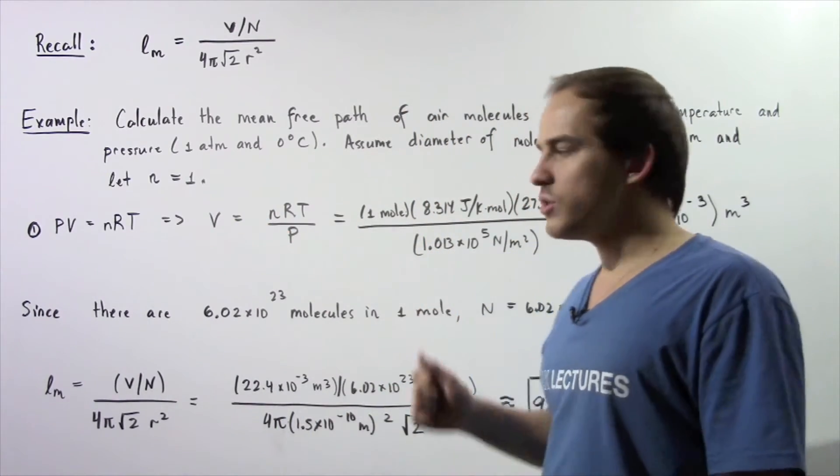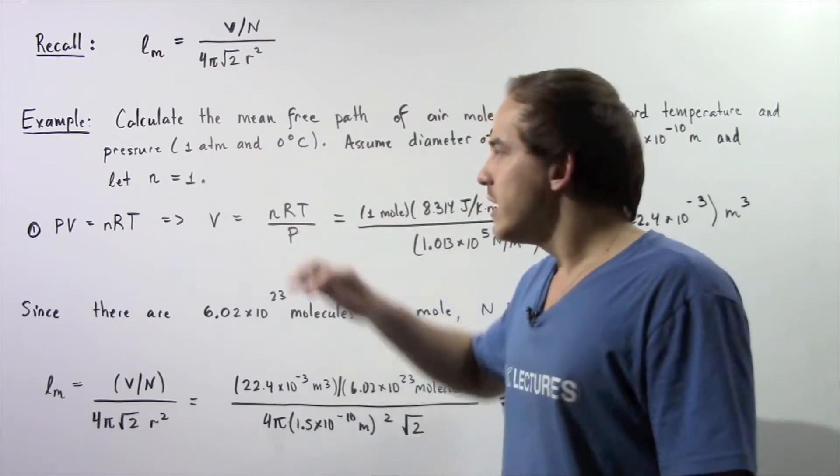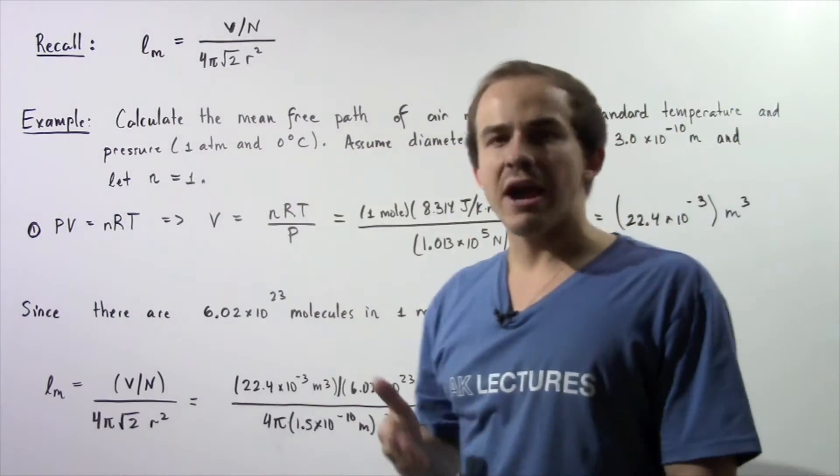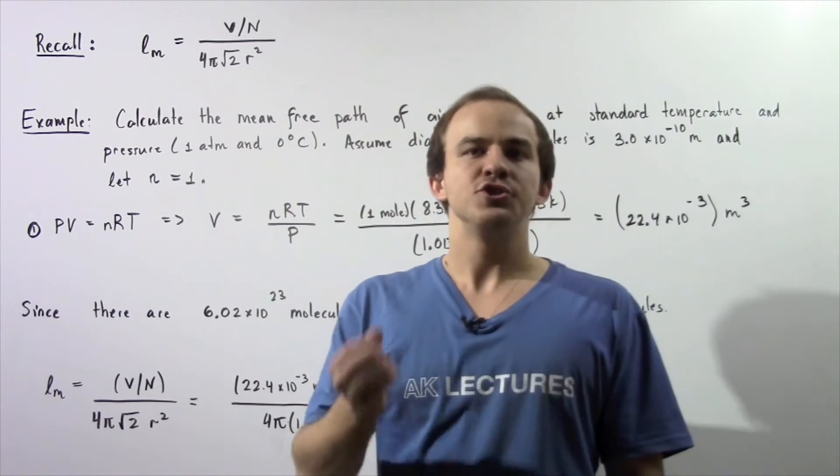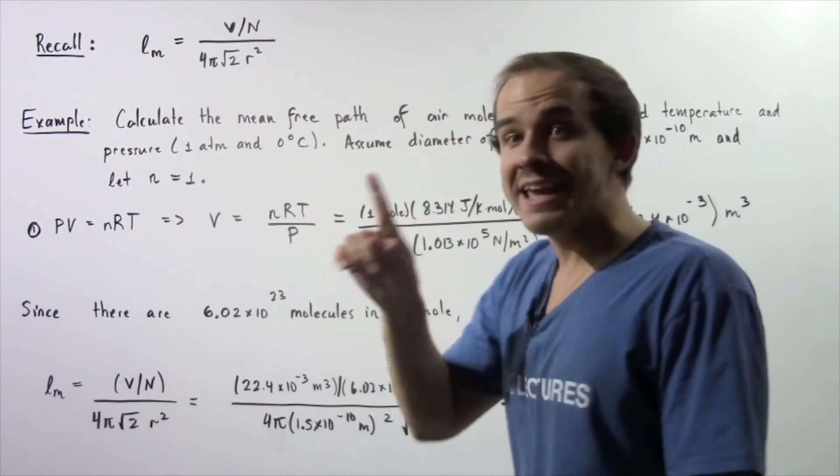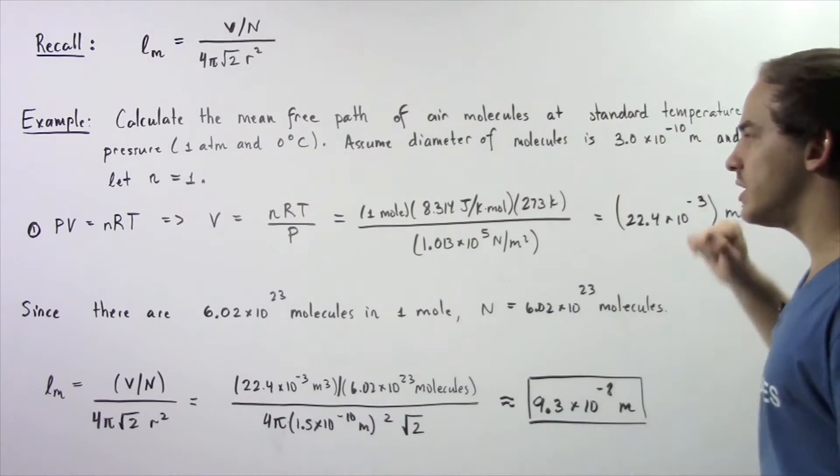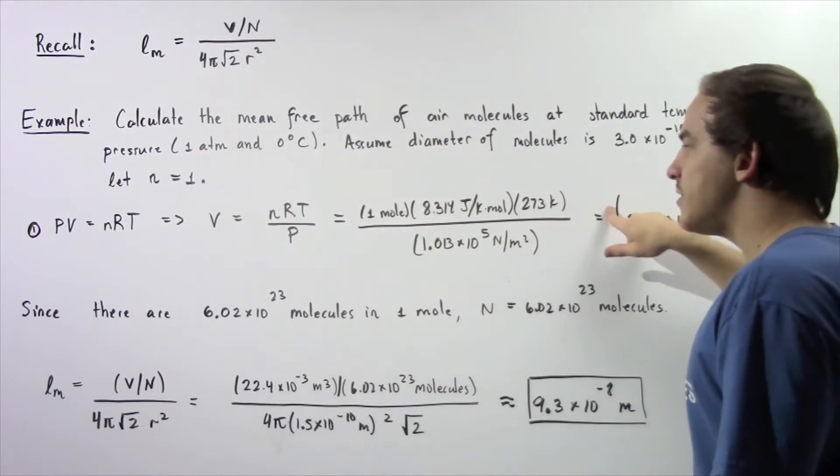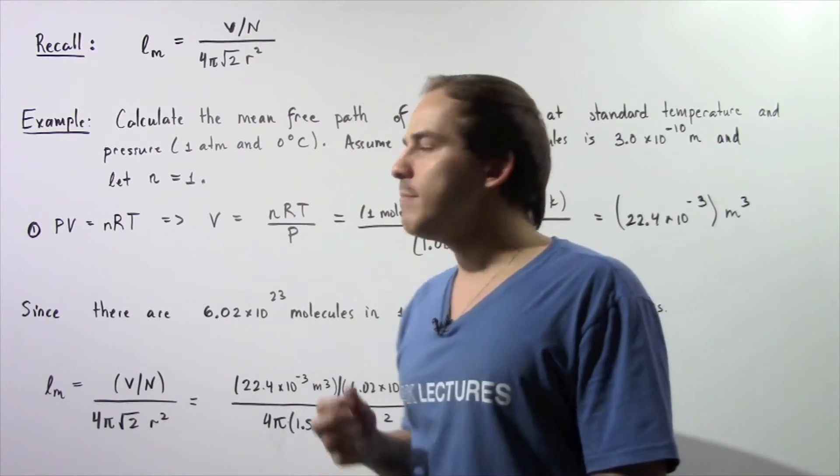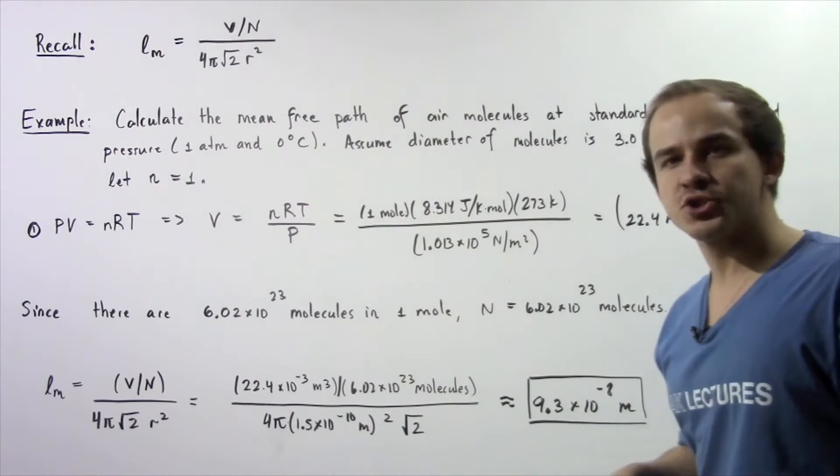The volume is equal to nRT divided by P. We know that n is 1 mole. We know r is our constant 8.314 joules divided by moles times Kelvin. And we know that T in Kelvins is 273 K. We divide that by the pressure, and 1 atm is equivalent to 1.013×10⁵ newtons per meter squared.